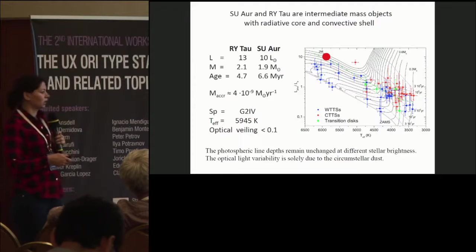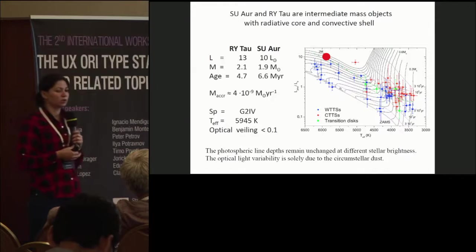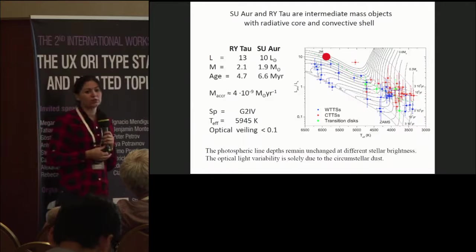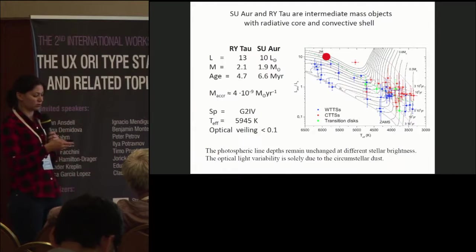And the photospheric line depths in the stars remain unchanged at different stellar brightness. So, that means that the optical light variability is solely due to the circumstellar dust.